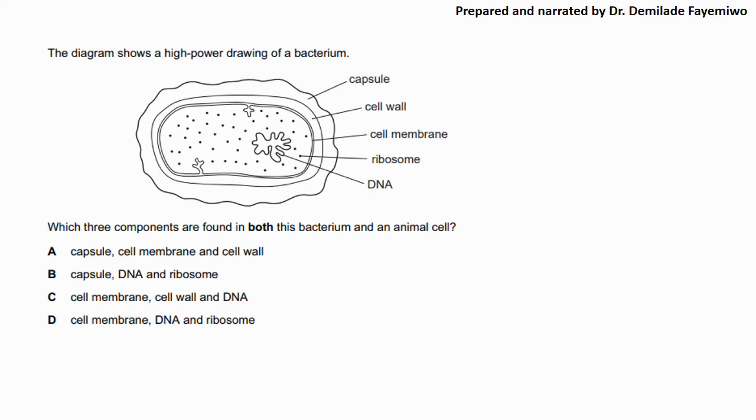So this question says here that this diagram shows a high power drawing of a bacterium and you can see the different labels of the bacterium and it says which three components are found in both this bacterium and an animal cell. If you look at the options, it says capsule, cell membrane and cell wall for option A, capsule, DNA and ribosome for option B, cell membrane, cell wall and DNA for option C, cell membrane, DNA and ribosome for option D. Can you guess what the answer is or do you know what the answer is?